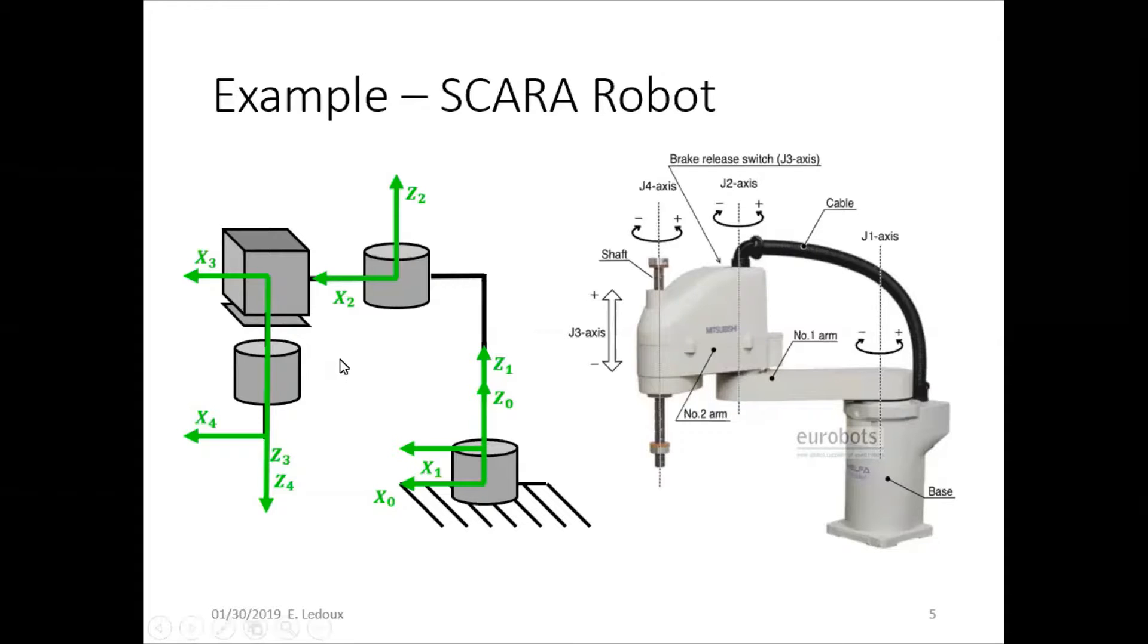Now here we have a coordinate frame on each joint with z pointing in the direction of the joint's axis and x points perpendicular.